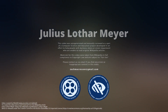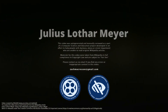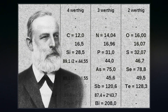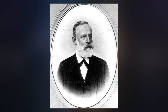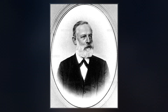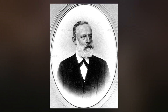Julius Lothar Meyer was a German chemist and one of the pioneers in developing the first periodic table of chemical elements. Both Mendeleev and Meyer worked with Robert Bunsen. He never used his first given name and was known throughout his life simply as Lothar Meyer.